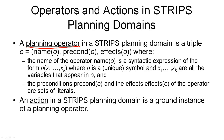A planning operator in the STRIPS representation is simply a triple — meaning it consists of three different things: a name (the name of the operator), the preconditions of the operator, and the effects of the operator.